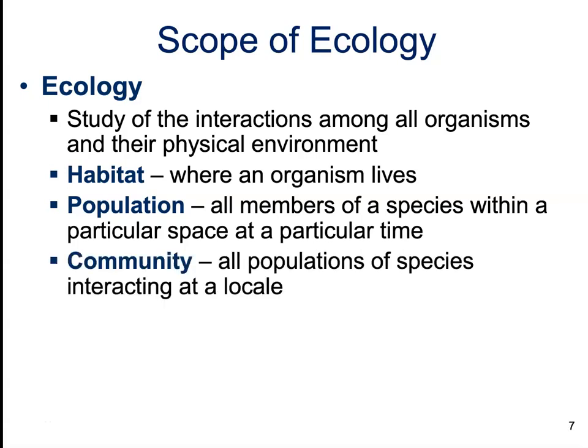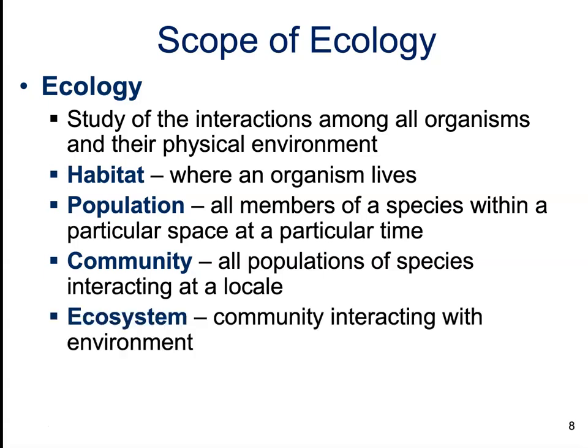A community consists of all the populations of multiple species interacting at that locale. For example, in a coral reef there are numerous populations of algae, corals, crustaceans, fishes, etc. — all of those would be part of the community. At this level, ecologists are studying how those populations interact with one another.